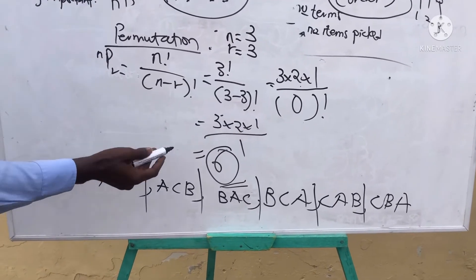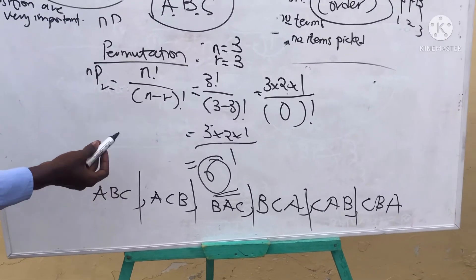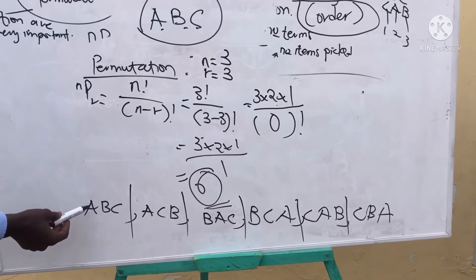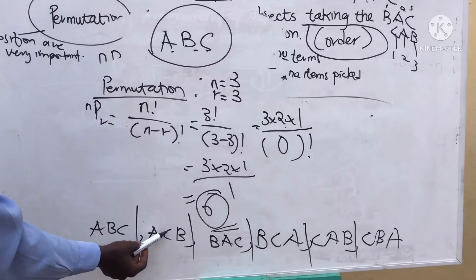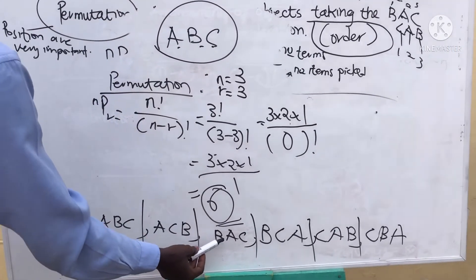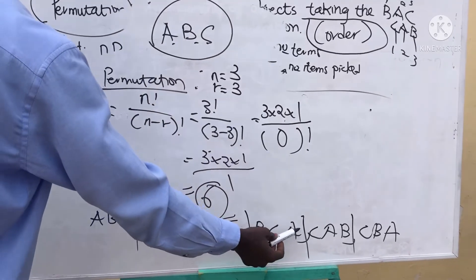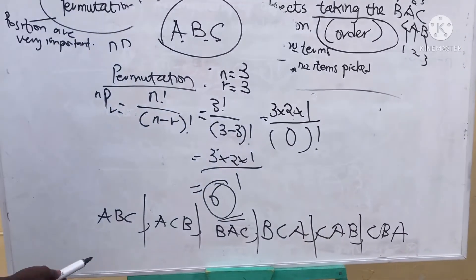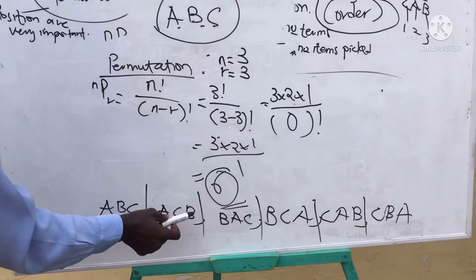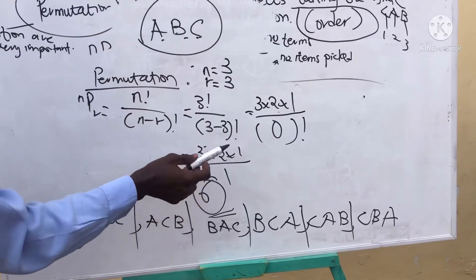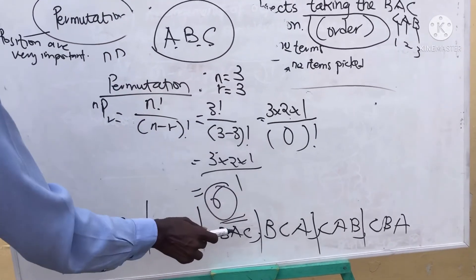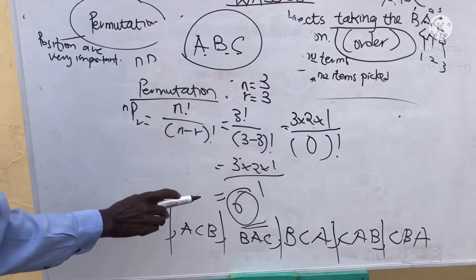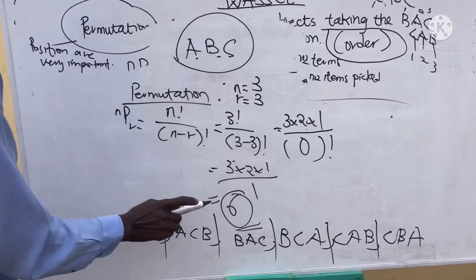Working it out manually, the six arrangements are: A-B-C, A-C-B, B-A-C, B-C-A, C-A-B, and C-B-A. These are all six possible arrangements, confirming that in permutation the positions are considered very important.